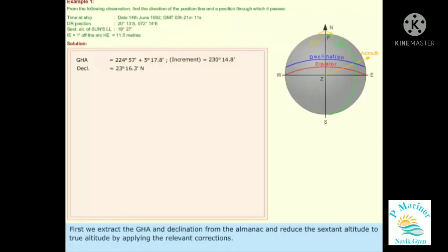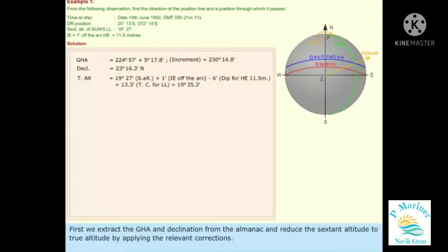We extract the GHA and declination from the almanac and reduce the sextant altitude to true altitude by applying the relevant corrections.